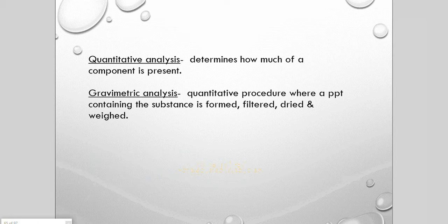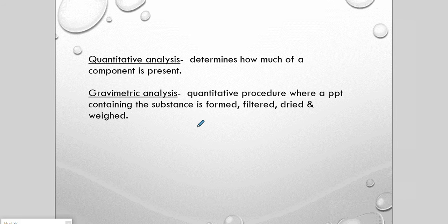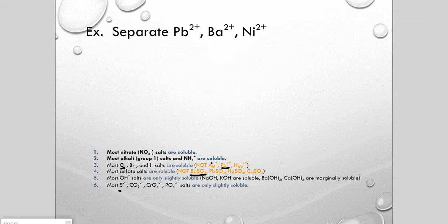This leads us to quantitative analysis — determining exactly how much of a component is present by massing what we have after selectively precipitating parts out. Gravimetric analysis is a quantitative procedure where a precipitate of a substance is formed, filtered off, dried, and weighed. Imagine we did those last procedures, then filtered, dried, and weighed each precipitate to see exactly what was present and closely quantify the masses in the original solution.